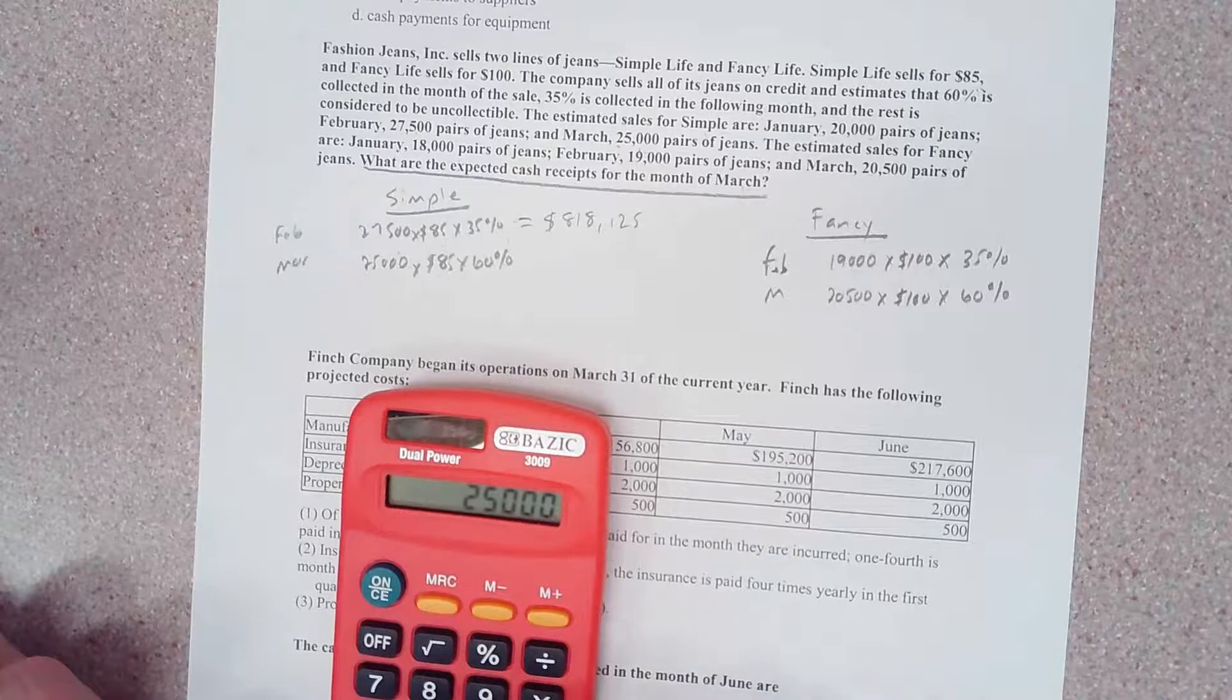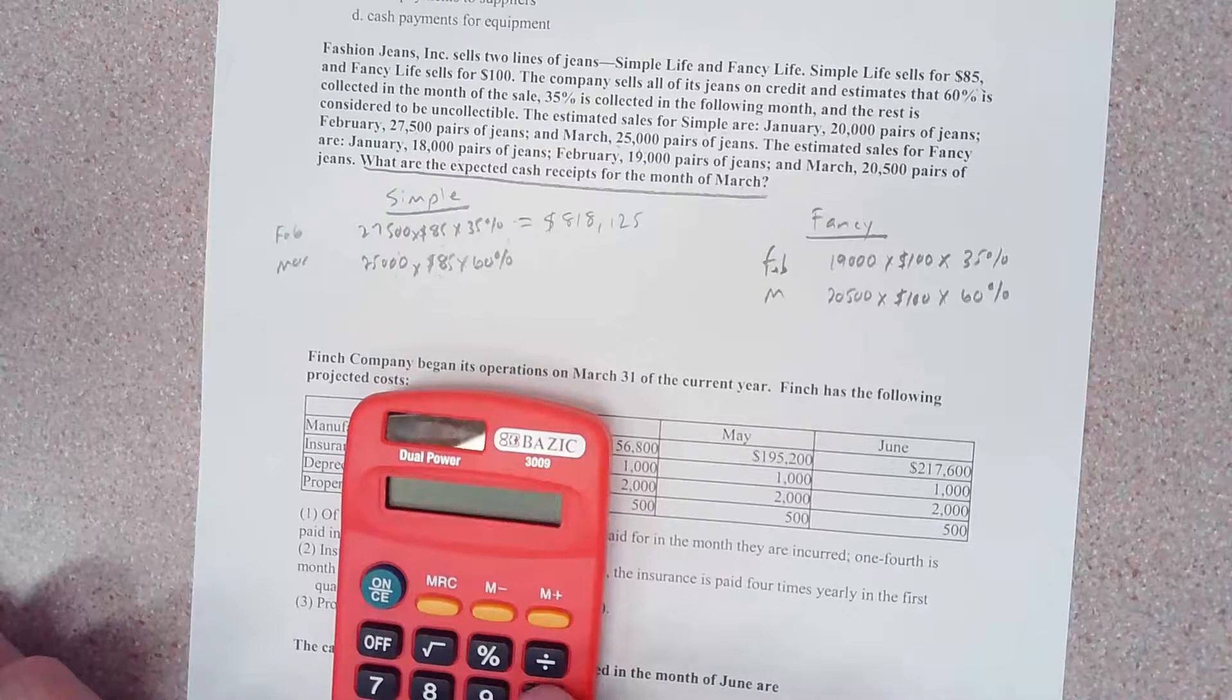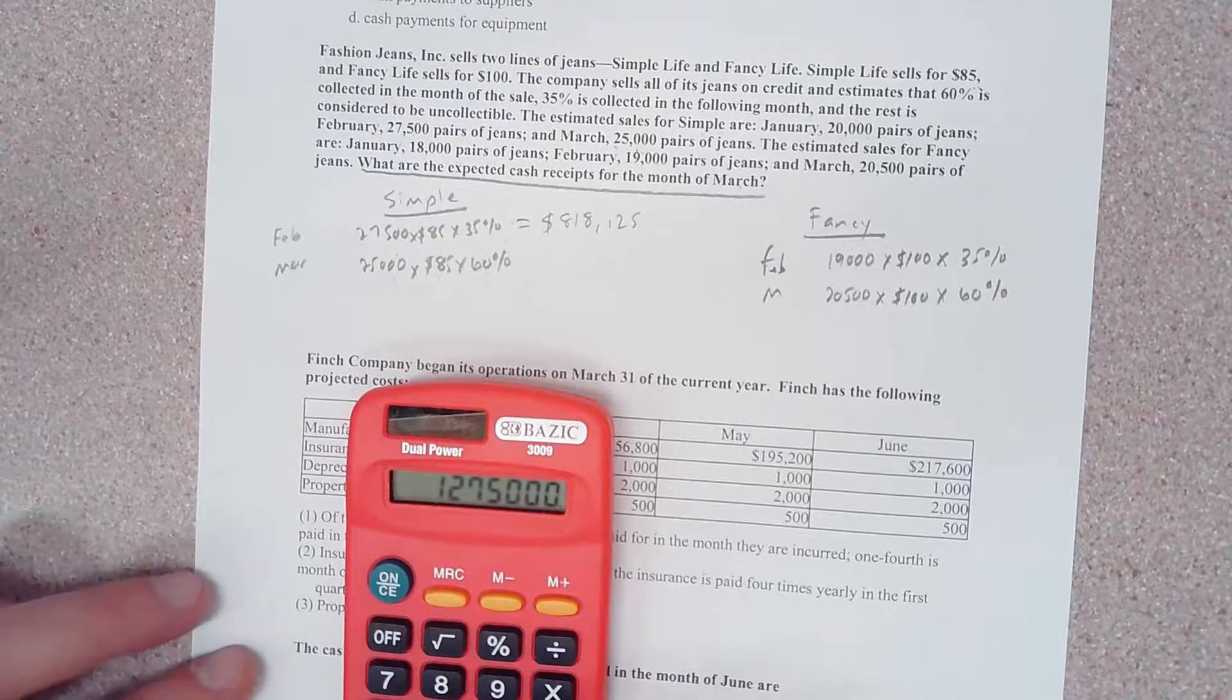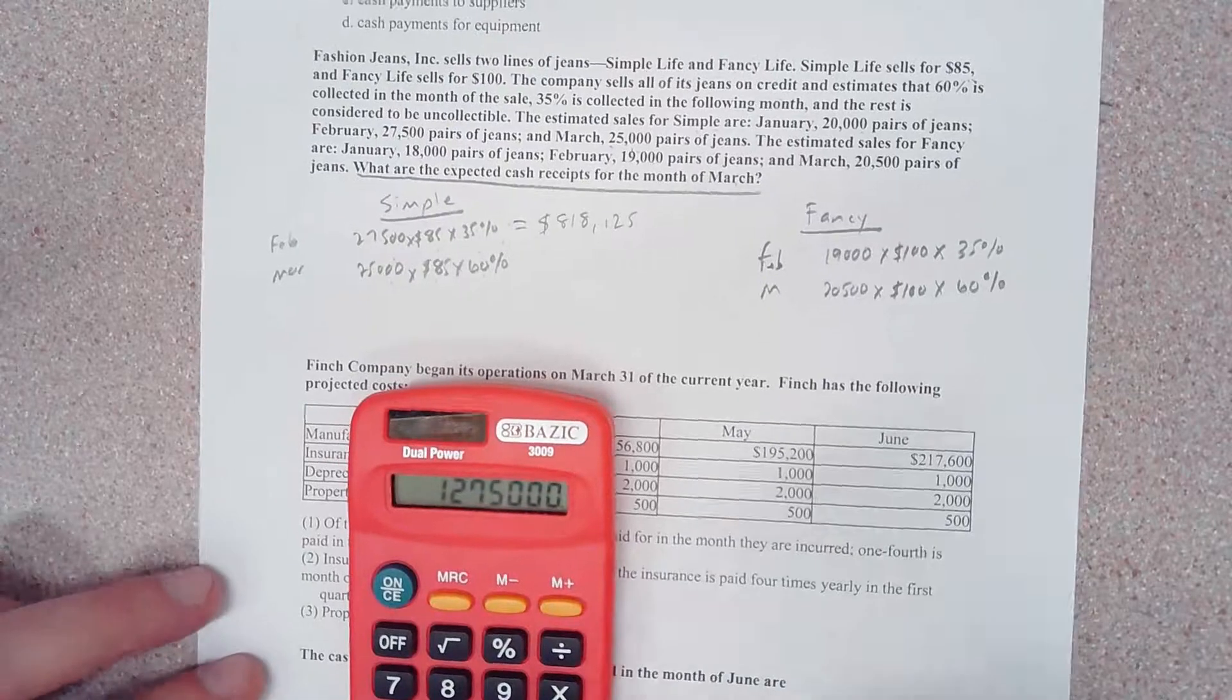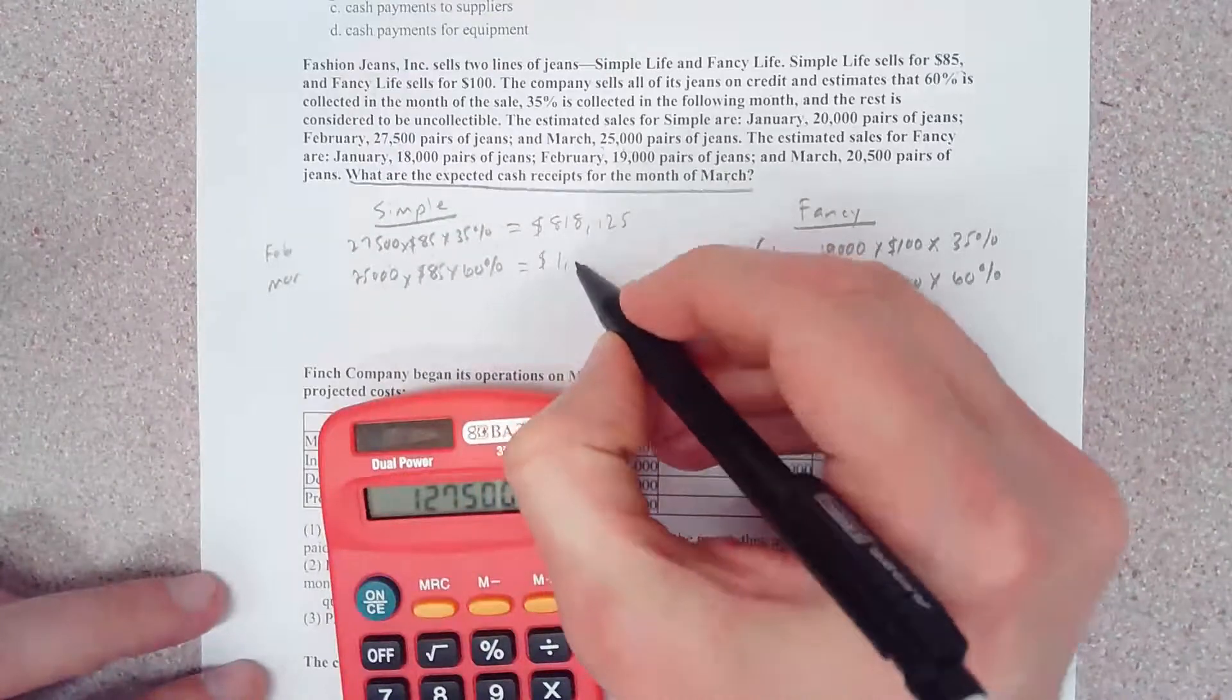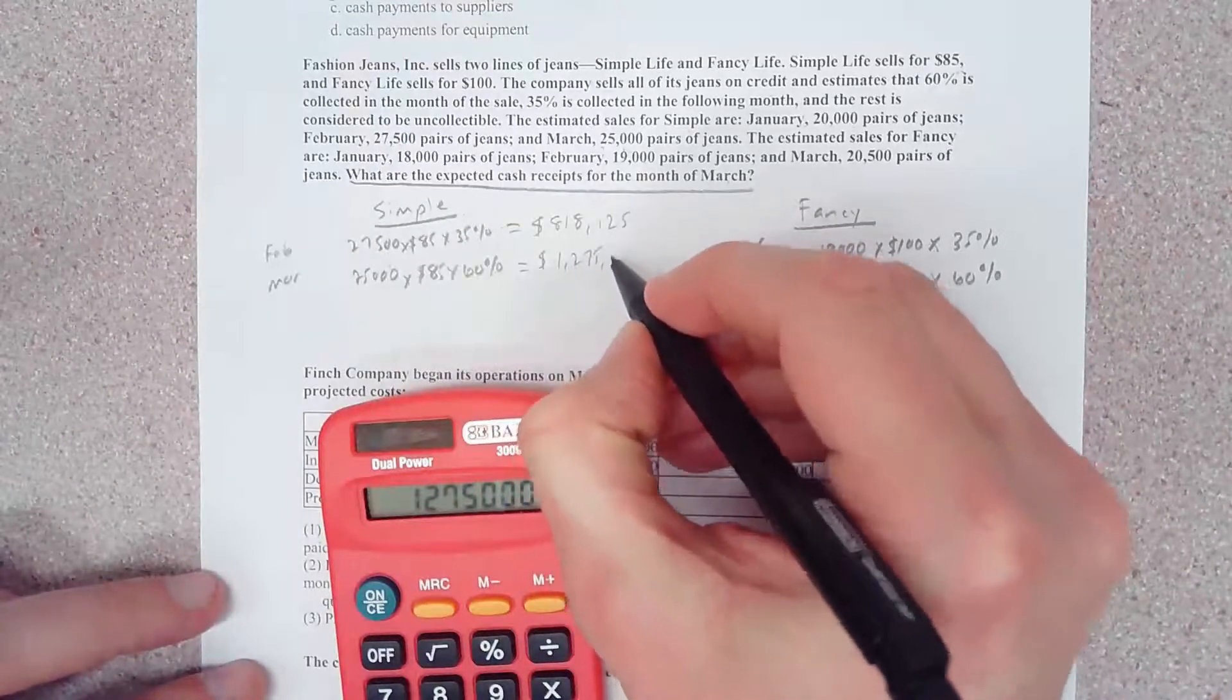And then let's do our Simple jeans. We sold 25,000 pairs in March times 85 times 0.6, and that looks like 1,275,000.